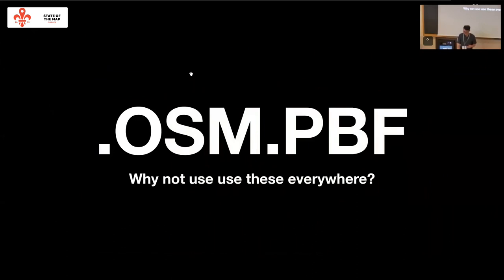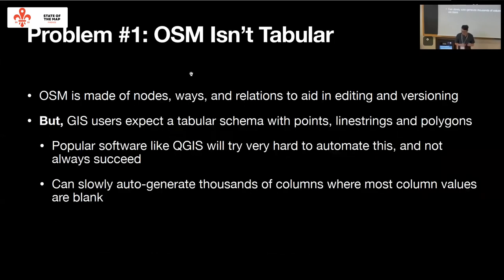The next question is: OSM PBF files are the raw data — why not use these absolutely everywhere? The fact is that OpenStreetMap is not a tabular format. A tabular format is like an Excel spreadsheet — it has a geometry column, a column called name, a column called class, a waterway equals true column. OSM is made of nodes, ways, and relations. That data model is designed to aid in editing and versioning. But once you bring it into your GIS application, you expect a more structured format. Some software will attempt to do this for you, but is often not very successful — it might try to scan through the entire dataset and auto-generate 200 different columns where most of those column values are just blank.